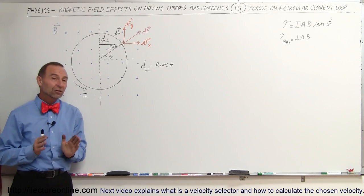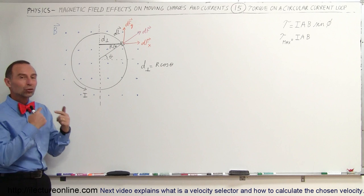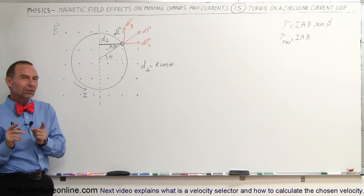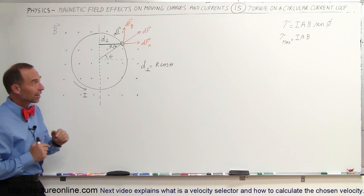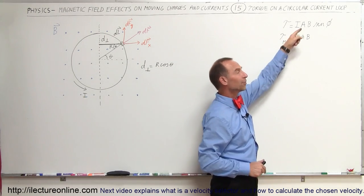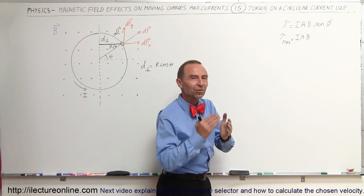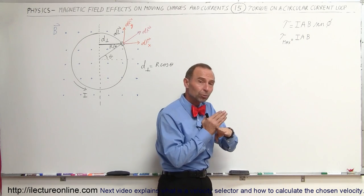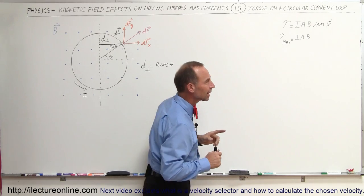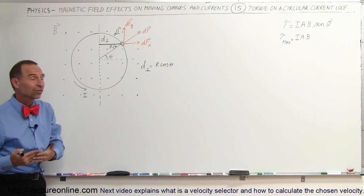Welcome to ElectronLine. In this video, we're going to show you how to calculate the torque on a circular current-carrying loop inside a magnetic field. Remember when we did the problem for a rectangular loop, we found that the answer is the current in the loop times the area of the loop times the strength of the magnetic field times the sine of the angle between the normal to the loop and the magnetic field. Now here we're going to show what it is for a circular loop and see if it's the same or different.